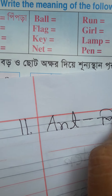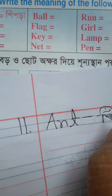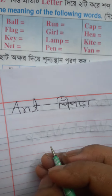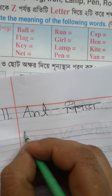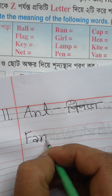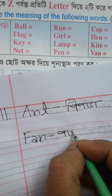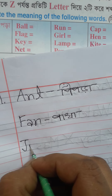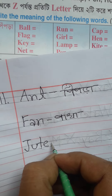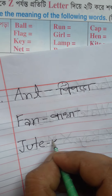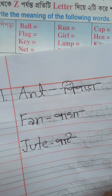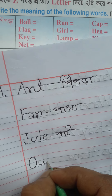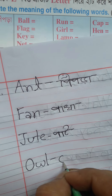The first one is number 11. Ant. Ant is the paper. The paper is the paper. Ant, the pen. A pen. Sute. Jute. An art is the paper.